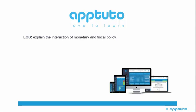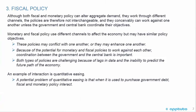This LOS has explained the interaction of monetary and fiscal policy. Although both fiscal and monetary policy can alter aggregate demand, they work through different channels. The policies are therefore not interchangeable, and they conceivably can work against one another unless the government and central bank coordinate their objectives. Monetary and fiscal policy use different channels to affect the economy, but may have similar policy objectives.